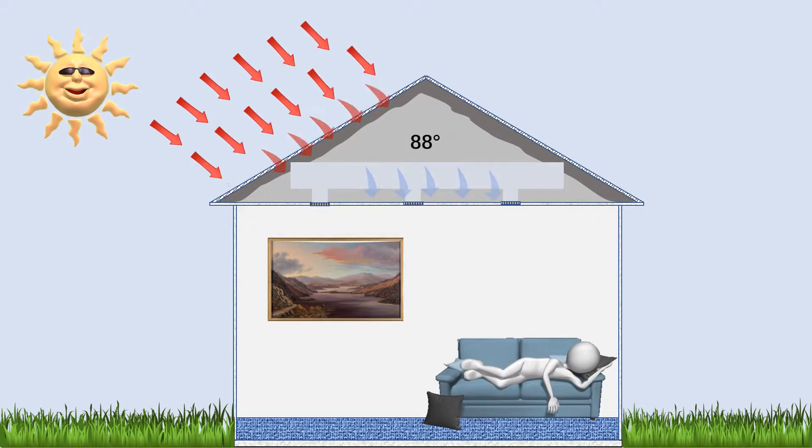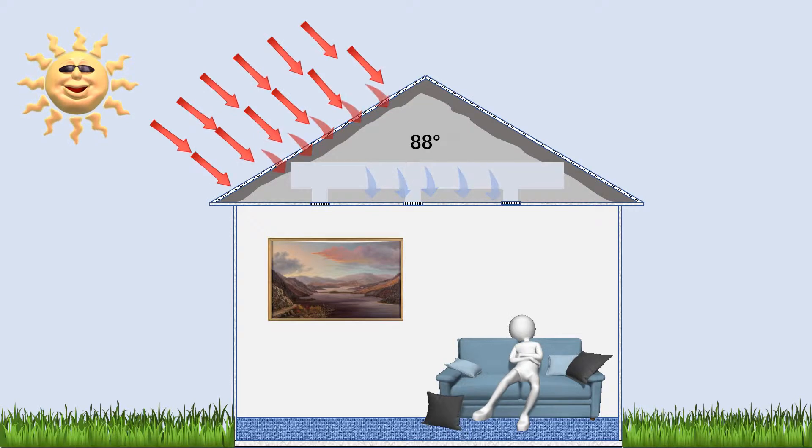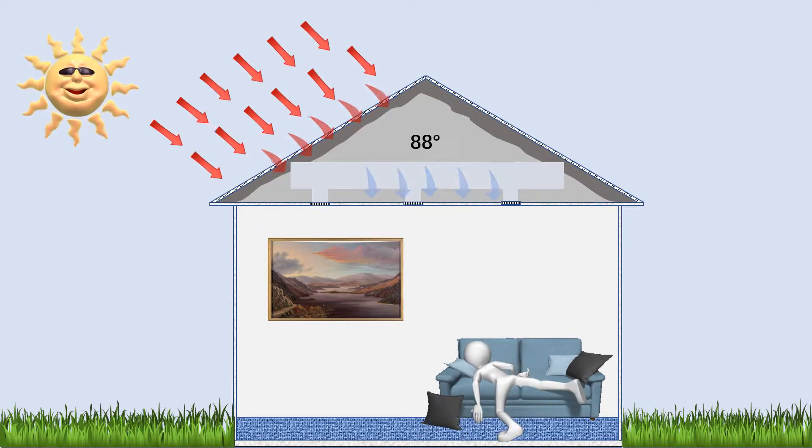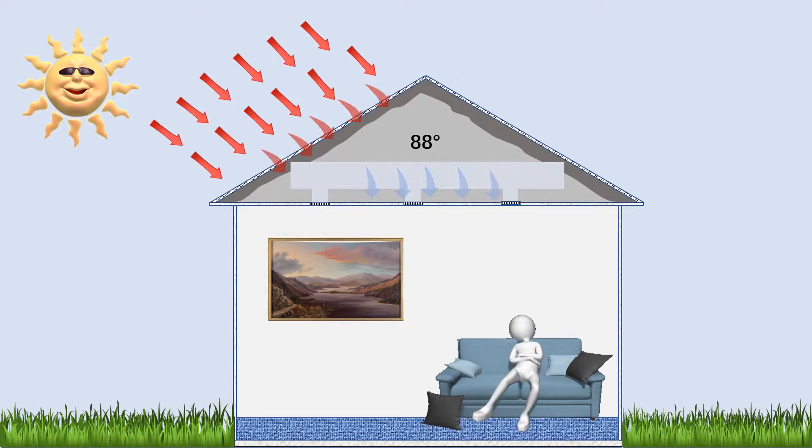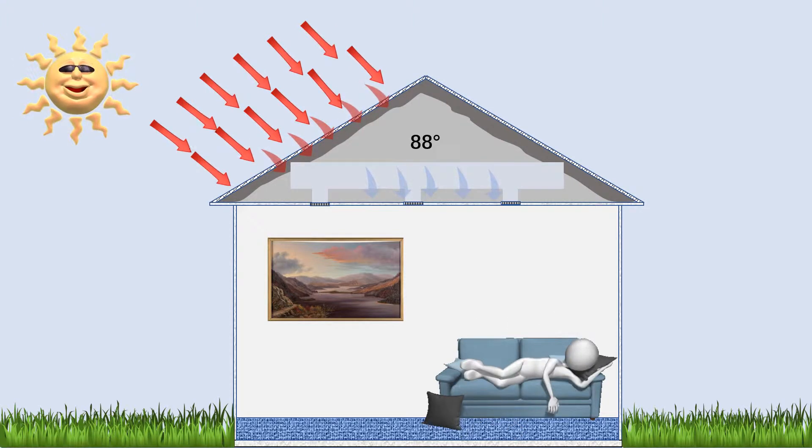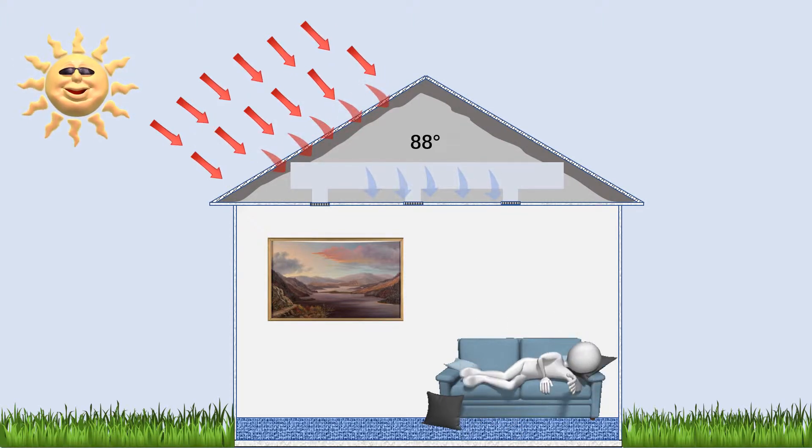And hence your home would need less AC to overcome the additional heat load. Now with this type of insulation system, typically we do not vent the attic. You close off all venting. By doing this, you make the attic part of the thermal envelope of the home.